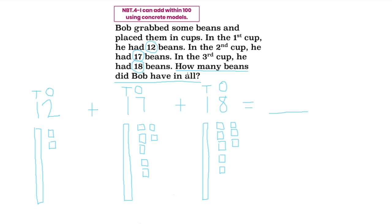Because I want to add them and find out how many beans Bob had in all, I am going to count them. When counting with base 10 blocks, we always count the tens first. Watch as I count my tens first, then count on with my units. 10, 20, 30 — now I am counting on by ones: 31, 32, 33, 34.